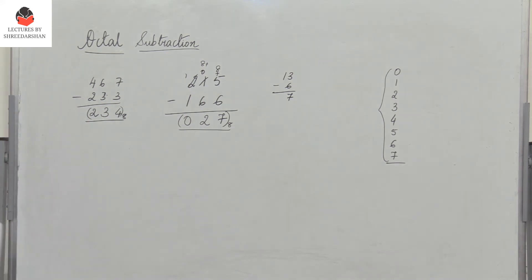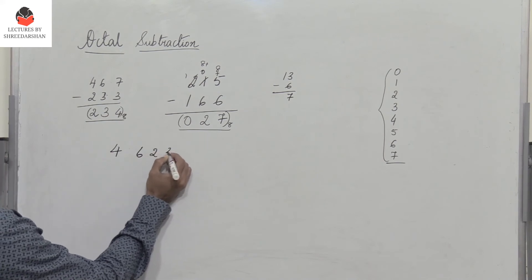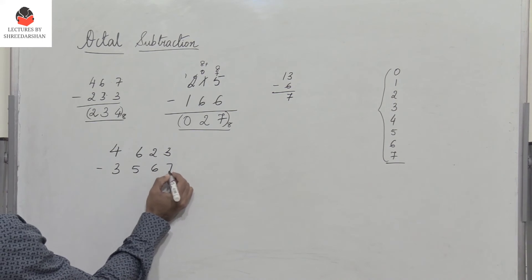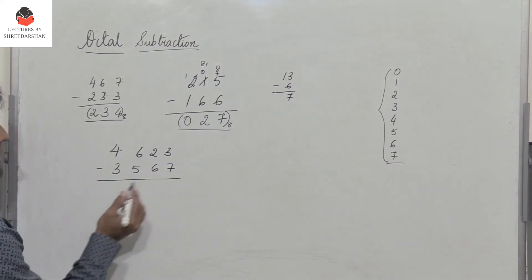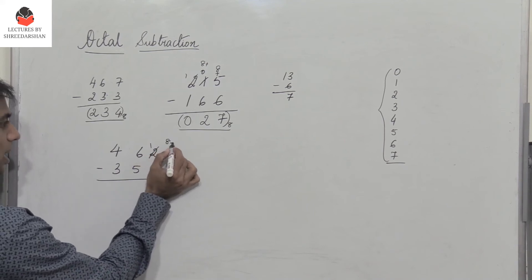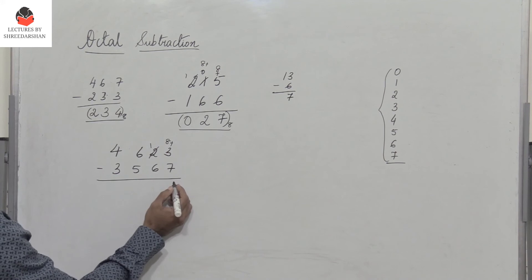So let's take another example. I have 4623 minus 3567. So again here, you observe that I need a borrow 1. So I add 8 to 3. So what is 8 plus 3? 11. So 11 minus 7 is 4.